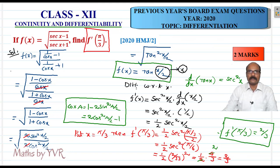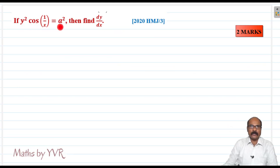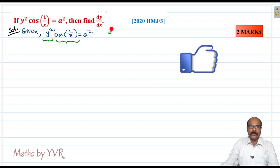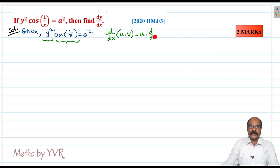Let us discuss one more question. If y² · cos(1/x) = a², then find dy/dx. Here a² is a constant. On the left side, we have a product of two functions: y² is one function and cos(1/x) is another. So we apply the product rule: d/dx of (u·v) = u · dv/dx + v · du/dx.